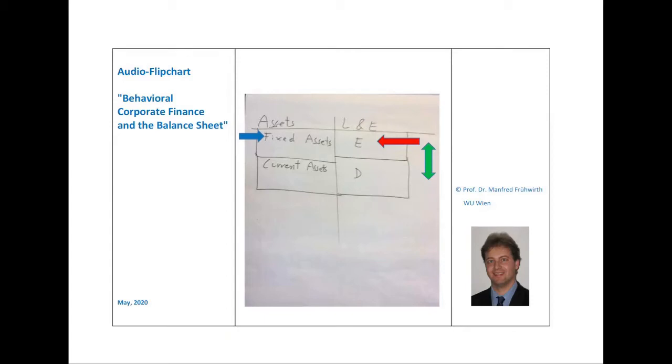Now, let us draw the link between the balance sheet and corporate finance, especially behavioral corporate finance. Behavioral corporate finance includes precisely the same objects of investigation as standard corporate finance. One of these objects of investigation is, for instance, capital budgeting decisions, including decisions on mergers and acquisitions. Here, you analyze whether a company should buy a fixed asset or not. This is illustrated on the flipchart by the blue arrow.